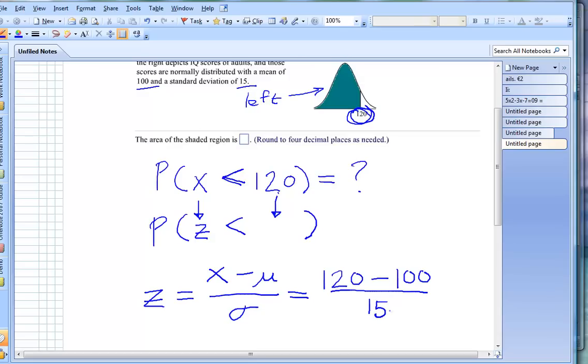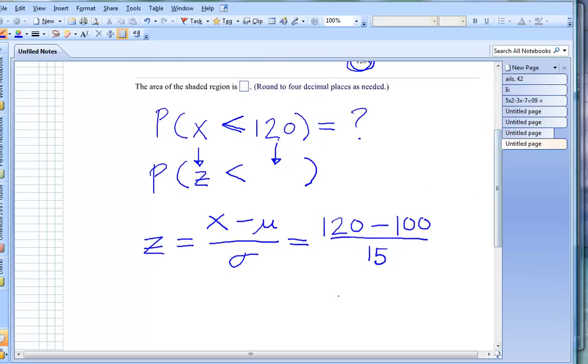And because of order of operations, we have to work this out in the proper order. We're going to work out the 120 minus 100 on top first. Let me slide this down so you can see. Our numerator is just going to be a 20. And our denominator is a 15. And if we take 20 and divide by 15, you will get an answer of 1.33333. And it goes on and on and on.